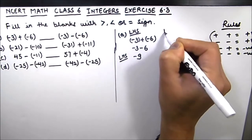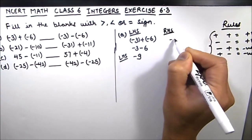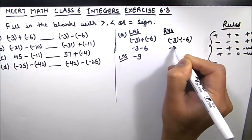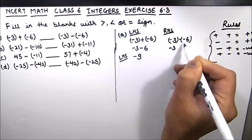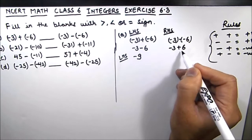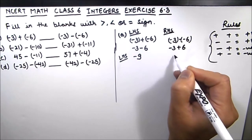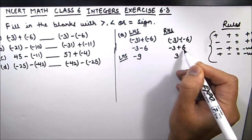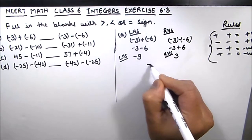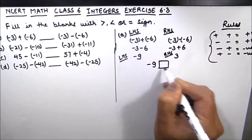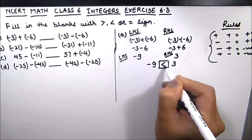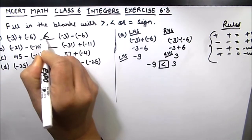For the right hand side we have (-3) - (-6). We write -3 as is. Now minus and minus gives us plus, so this becomes -3 + 6. Plus and minus means we subtract: 6 minus 3 is 3, and the sign is of the bigger number which is 6, so the right hand side is 3. Left hand side is -9 and right hand side is 3. Since 3 is bigger than -9, we use the less than symbol. The first answer is less than.